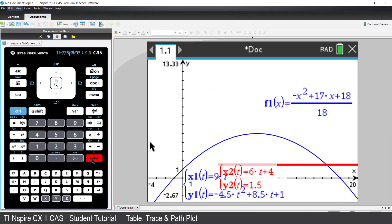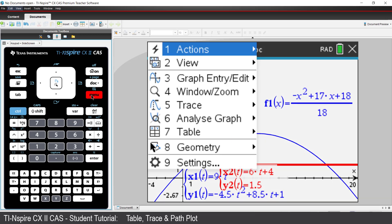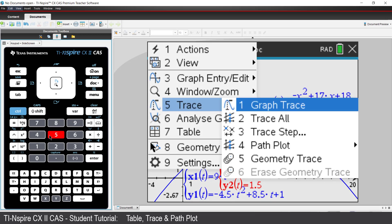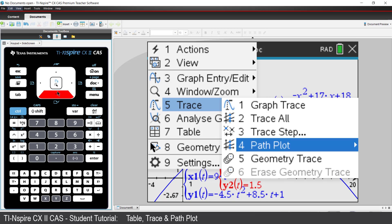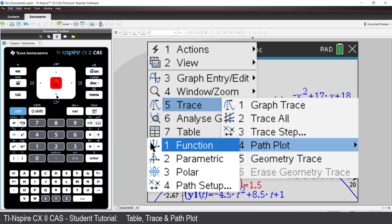The graph shows that the player definitely crosses paths with the ball. However, we can do a path plot to see if the ball and player are in the same place at the same time.